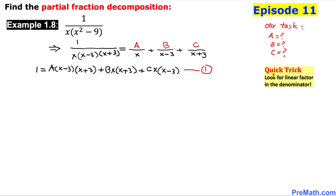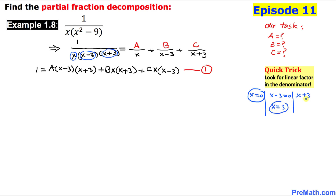Here is our quick trick: look for the linear factors in the denominator. We have three linear factors — x, x minus 3, and x plus 3. Setting each equal to zero gives us x equals 0, x equals positive 3, and x equals negative 3.